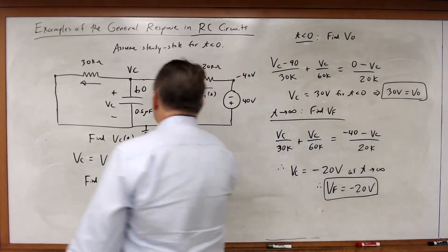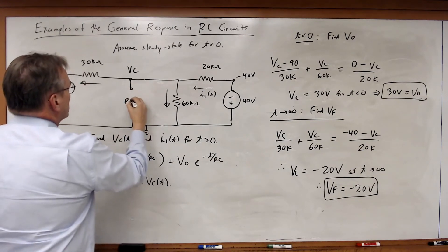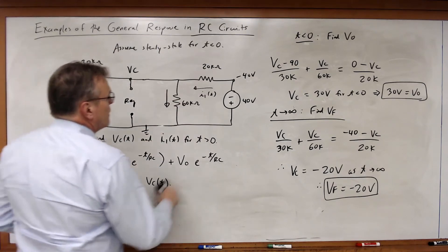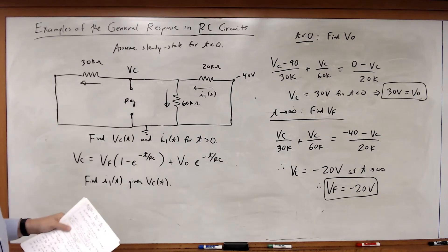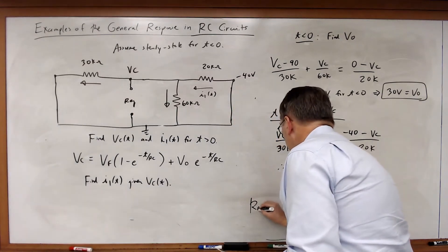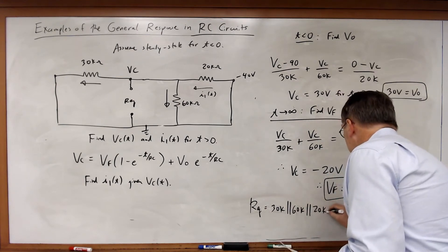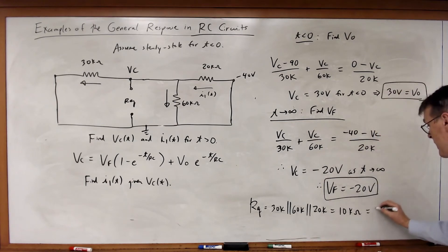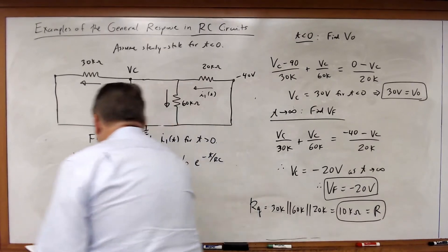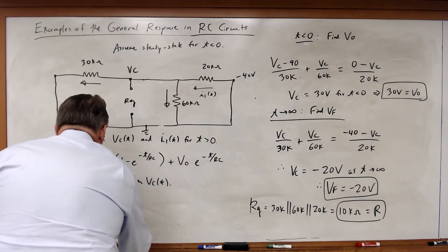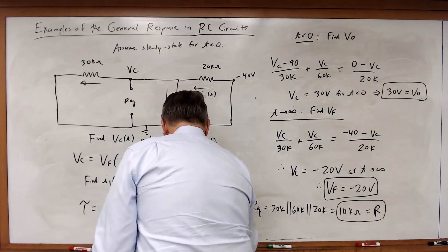Finally, I need to find the equivalent resistance REQ across the capacitor for t greater than zero. Zeroing the source leaves three resistors in parallel. REQ equals 30k in parallel with 60k in parallel with 20k, which equals 10 kilohms. That's my value of R. Therefore tau equals 0.5 microfarads times 10k, which equals 0.005 seconds.